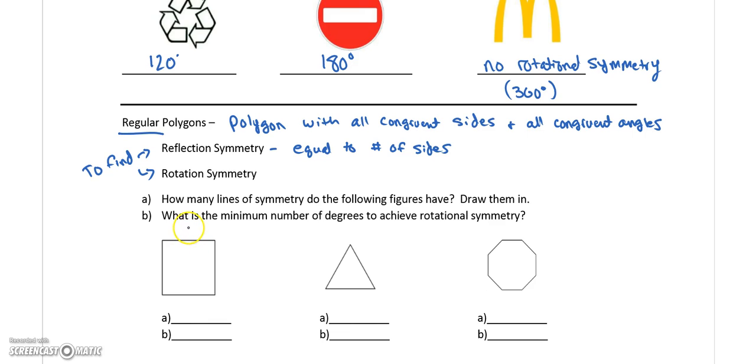The square, I could fold in half vertically. I could fold in half horizontally. And then I could fold along each of these diagonal lines. And they would land on itself. So for part a, how many lines of symmetry do we have? We have four for the square. And I could have known that because I have one, two, three, four sides.